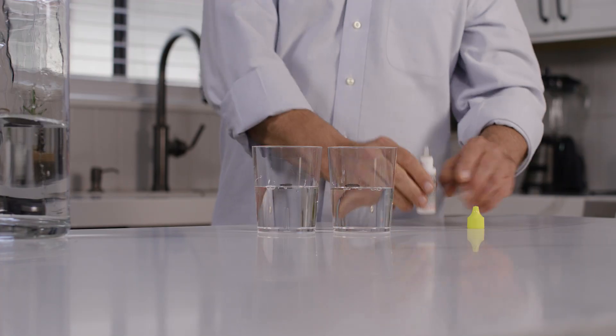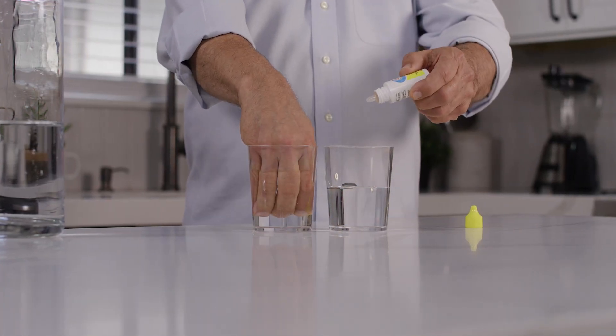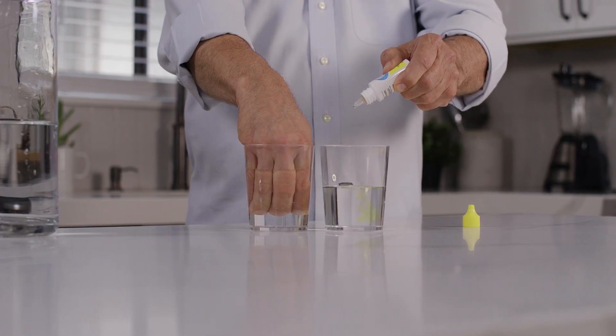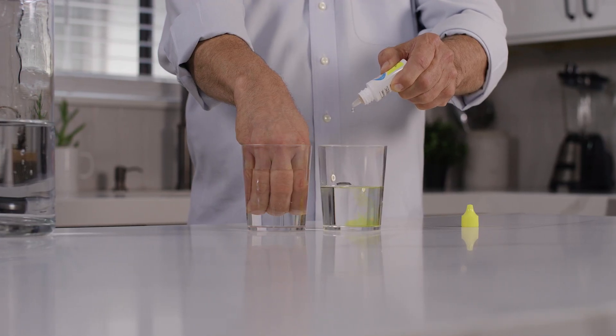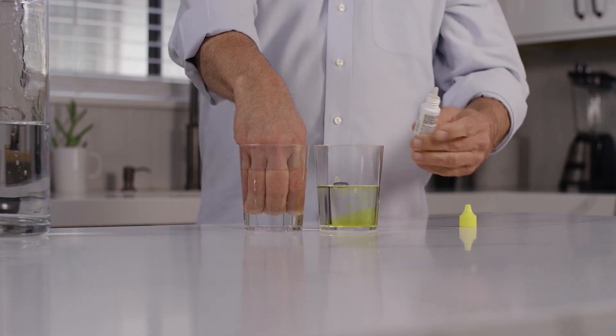Here, we're pouring plain, unfiltered tap water into two cups. Next, we'll use a chlorine test kit known as OTO to show there is a substantial amount of chlorine present in this unfiltered tap water. You can easily do this test yourself at home. OTO is available at hardware stores and pool supply stores.